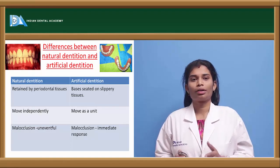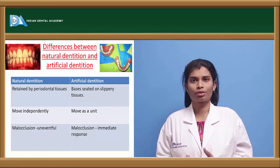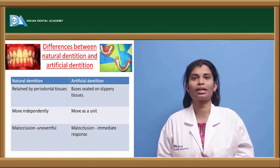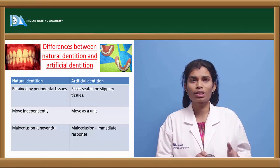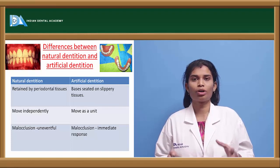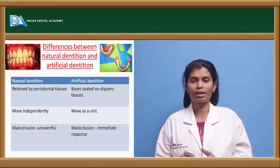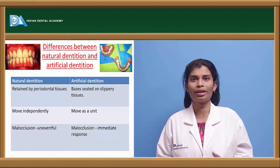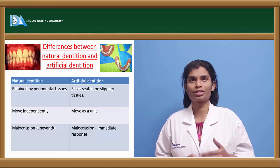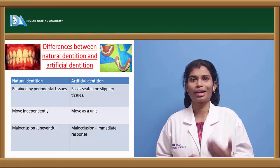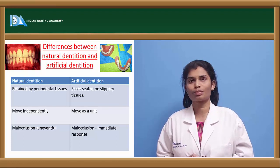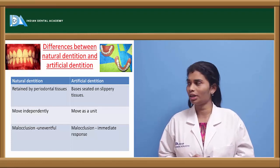When you have to restore an edentulous condition, you must first understand the differences between natural dentition and artificial dentition. The support mechanism and the differences between these help you in facing many biomechanical problems which arise in the course of treatment.